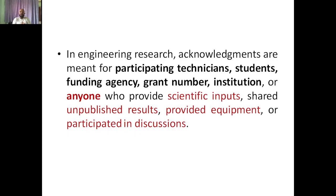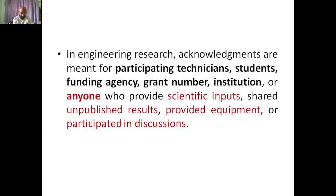Regarding funding agencies — those who are funding — in most papers at the end, especially for open access papers, you mention the funding agency: the research has been funded by so-and-so agency. Also, the grant number, institution, or anyone who provides scientific inputs, shares unpublished results, provides equipment, or participates in discussions should all be acknowledged. Sometimes we don't have all the equipment needed in our laboratory, so I used to go to NITs and my university for characterization for my PhD work, and I acknowledged those research centers in my acknowledgement section.